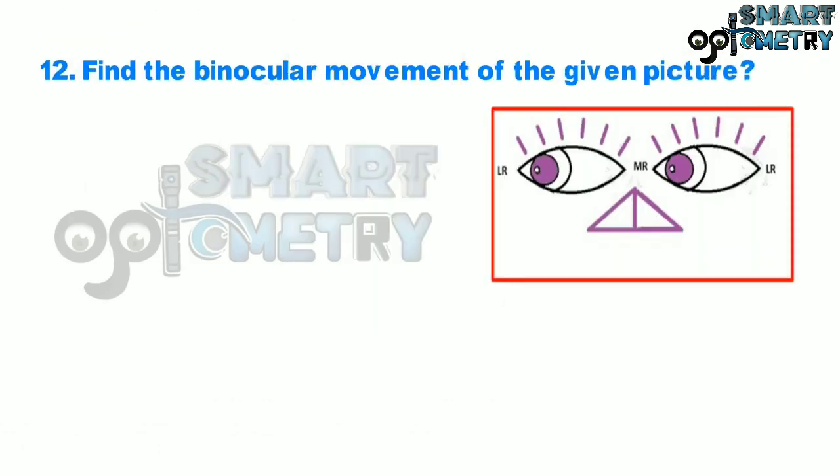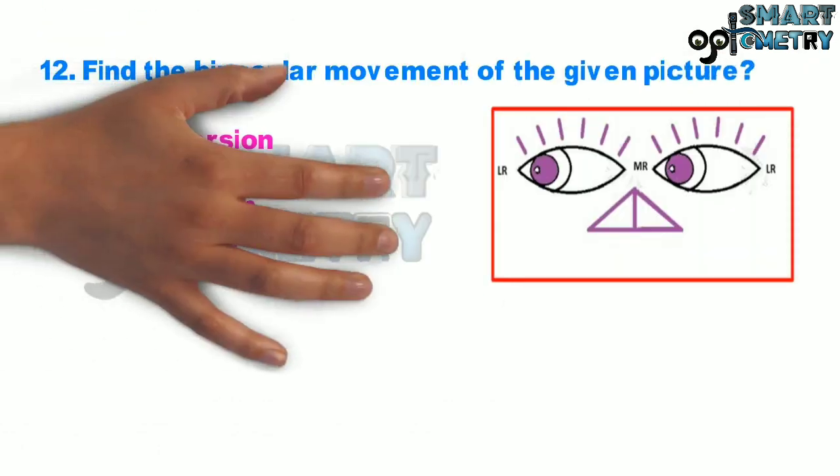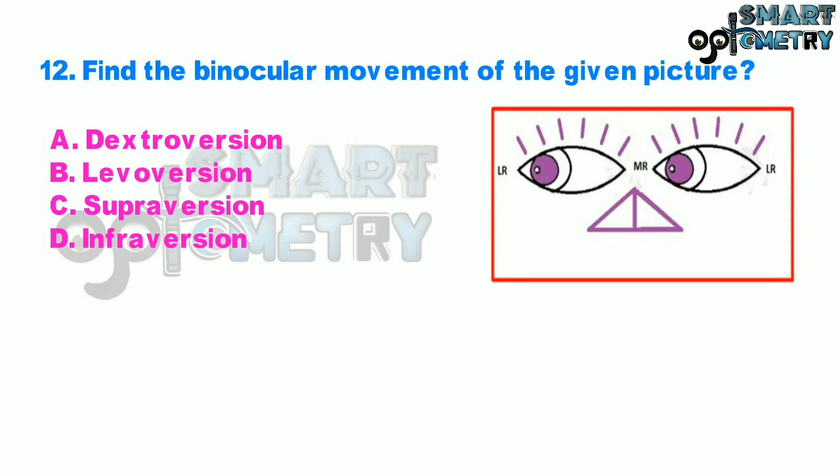Question 12. Find the binocular movement of the given picture. A. Dextroversion, B. Levoversion, C. Supraversion, D. Infraversion.